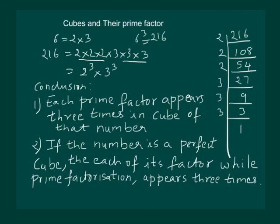And secondly, if the number is a perfect cube, we knew that 216 is a perfect cube. So, if the number is a perfect cube, then each of its factors, while prime factorization appears 3 times.